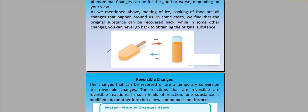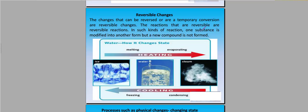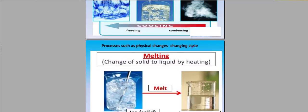Reversible changes - the changes that can be reversed or the temporary conversion is a reversible change. In such kind of reaction, substance is modified into another. Like water - we can melt ice into water, we can freeze water into ice, we can convert water into steam. The process is a physical change. This is a property that we can easily do physically.